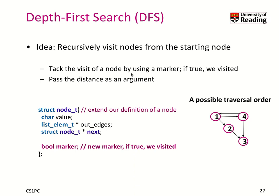We again have to remember if we visited a node or not, so we use our markers again and we have to pass the distance as an argument. There are different ways of doing it. What I do in this case is I put the marker into the node data structure, which is a way to deal with this information for our list graph implementation.